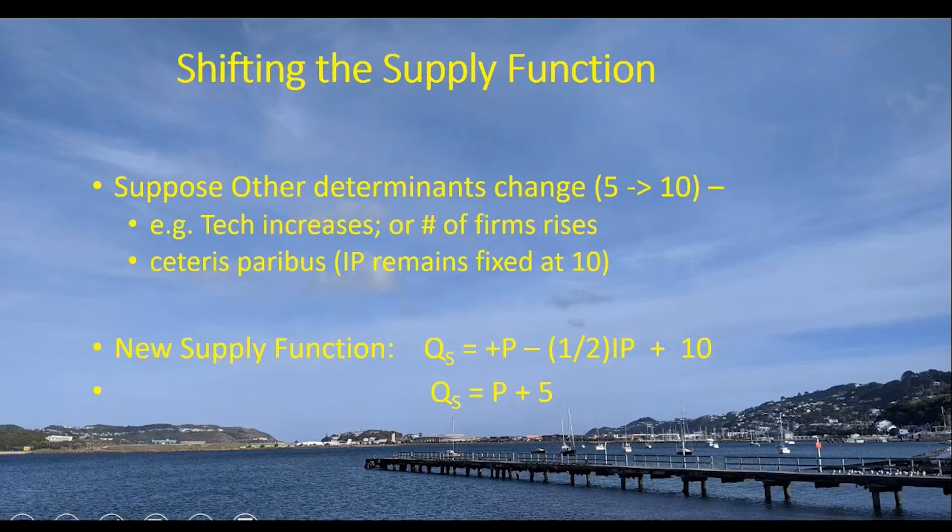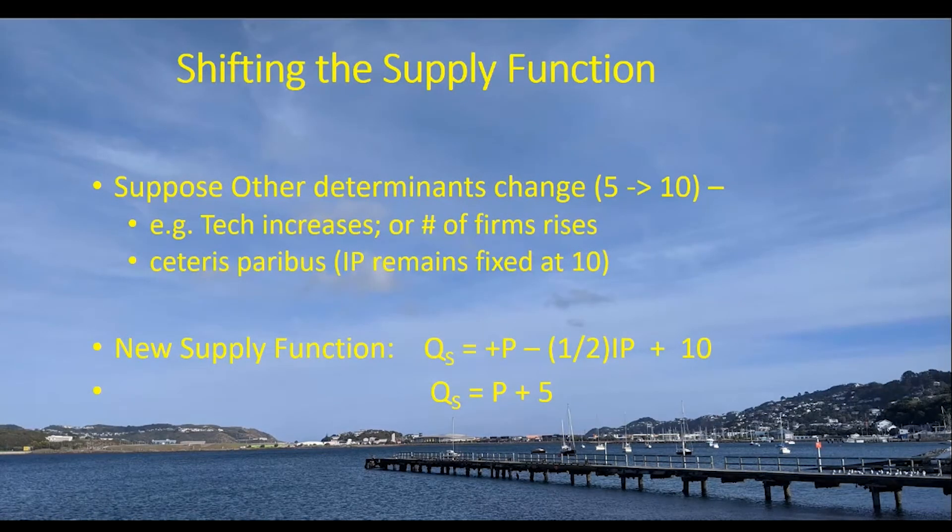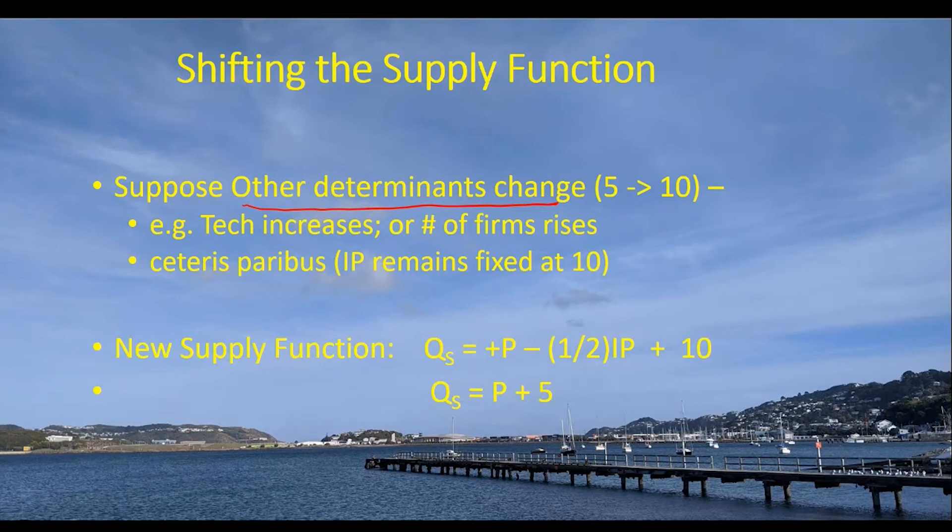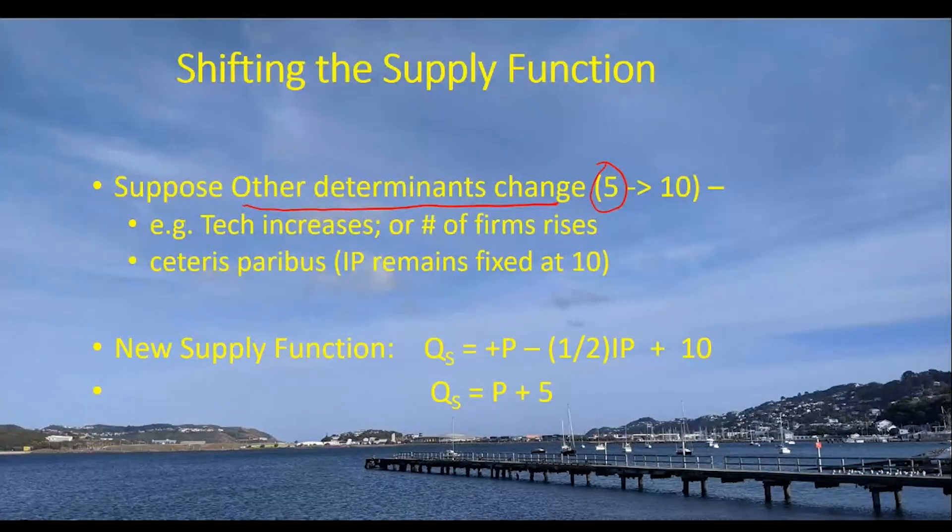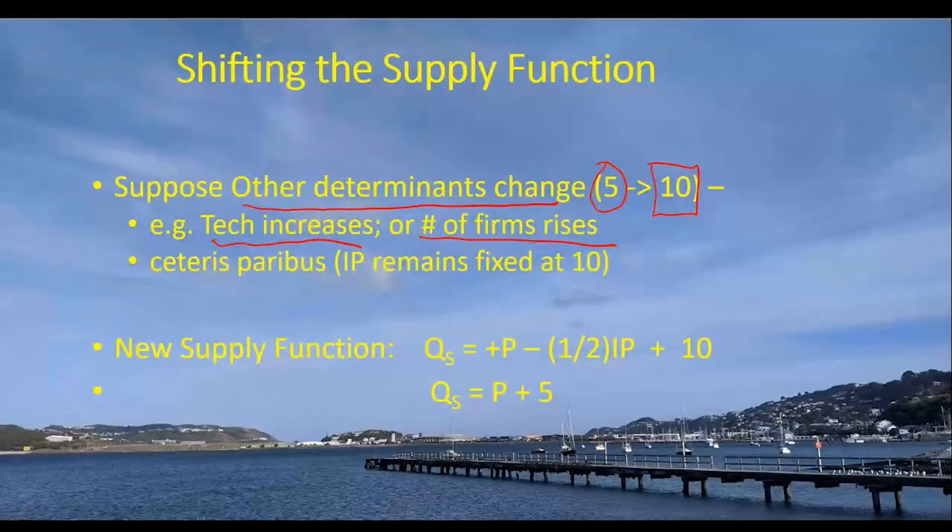But I want to emphasize again how the supply function shifts. So suppose other determinants change. And in that case, the other determinants, not counting input prices, is what's causing that five value to be true on the original supply function up above. But let's say that that supply value shifts to 10, maybe because there's a technology increase or maybe because the number of firms rises. All right. But let's change one other variable, other determinant. And let's see what happens.